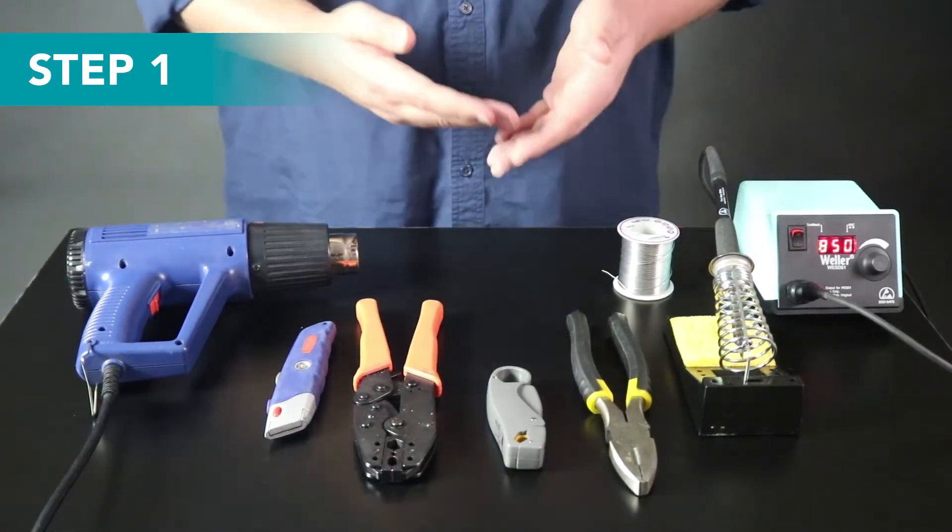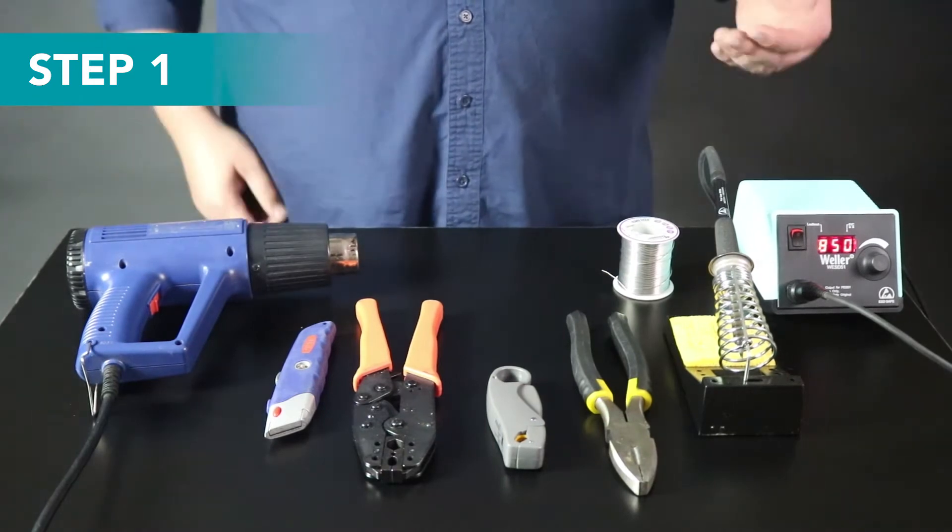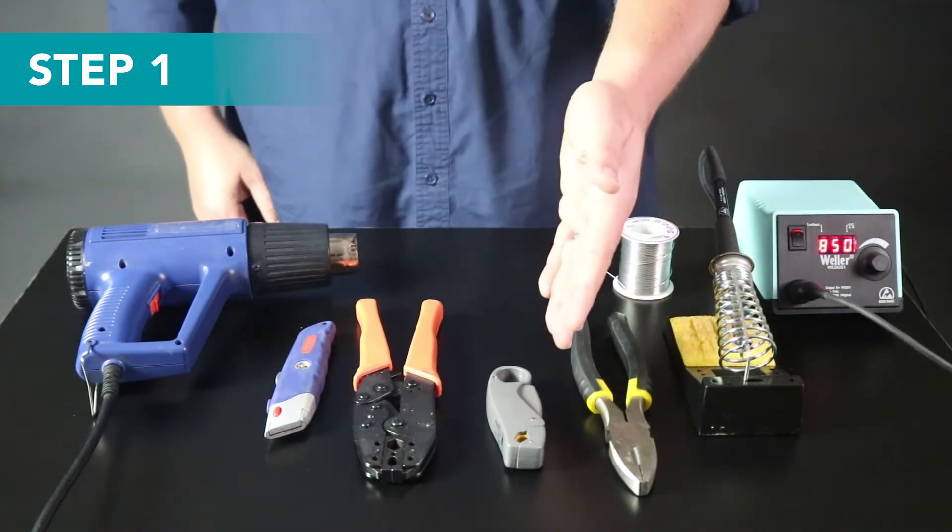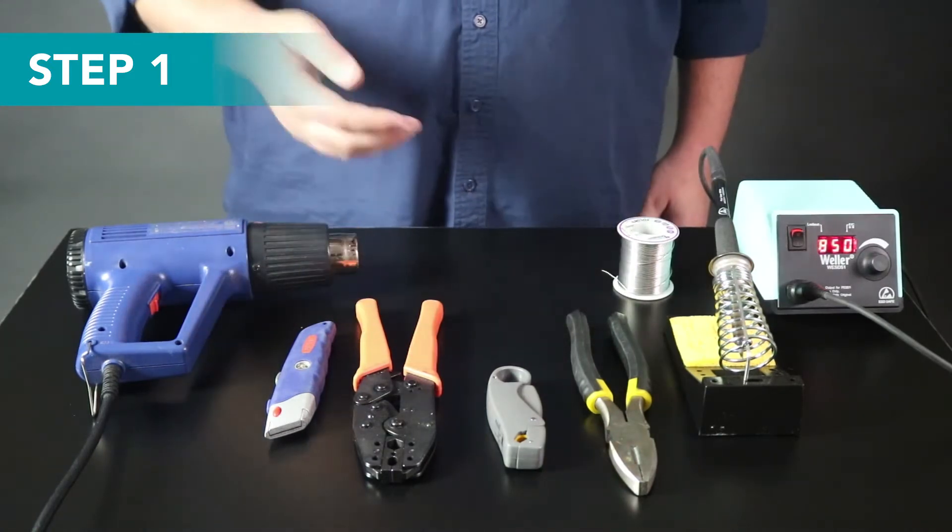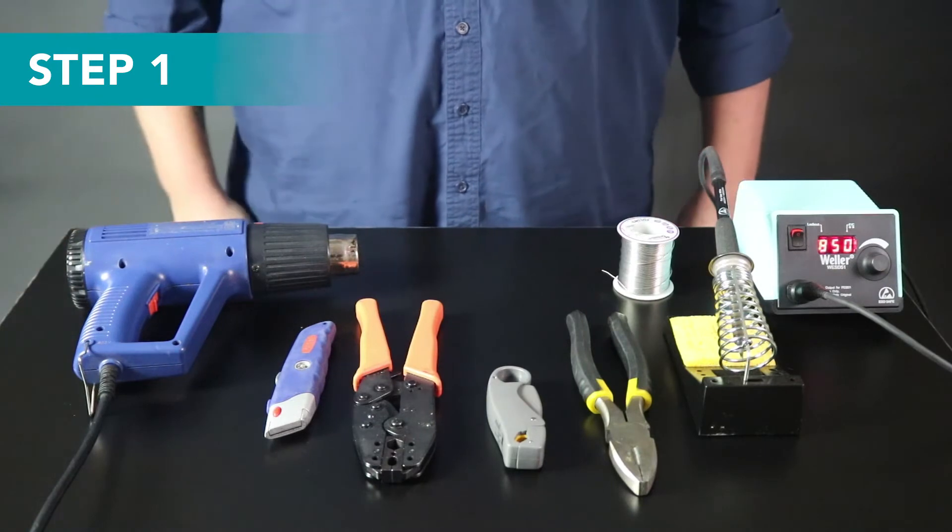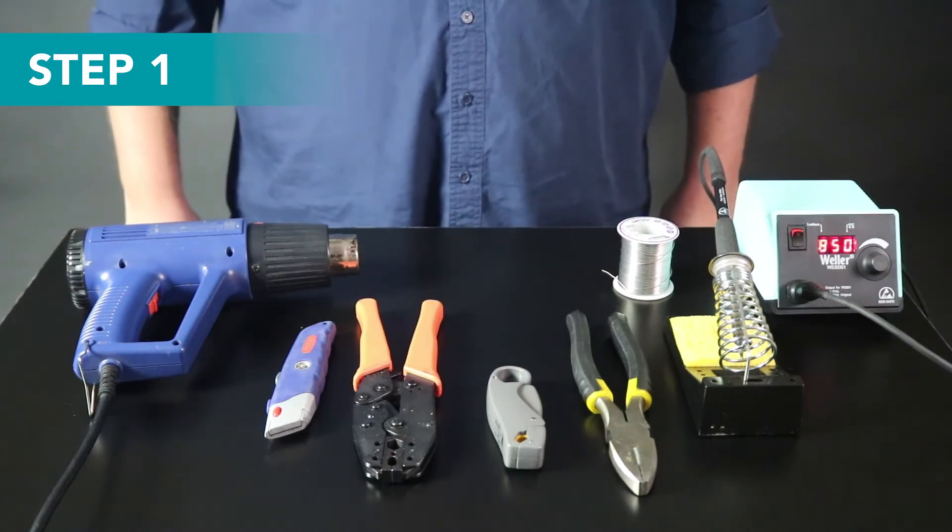Step one, make sure you have all of the necessary tools. These tools include a soldering gun, a pair of wire cutters, stripping tool, crimping tool, razor, and possibly a heat gun if you want to use the included shielding, and in our demonstration we will be going through that step.